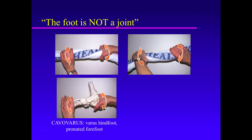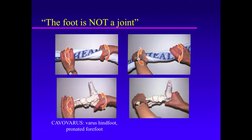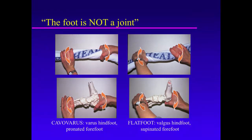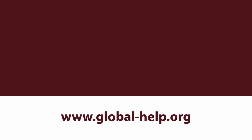And if we wring out the towel in the opposite direction — just as we wring out the foot model in the opposite direction — we'll supinate the forefoot and evert the hindfoot into a static valgus position. This combination of rotationally opposite deformities is a flat foot.